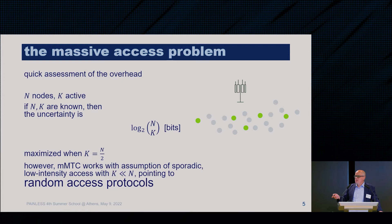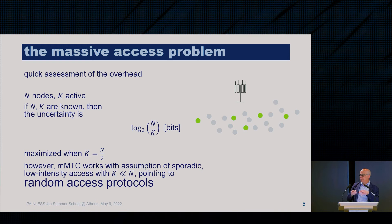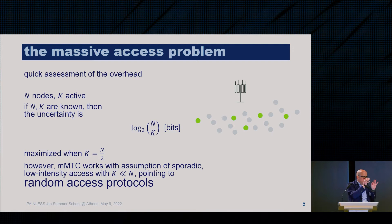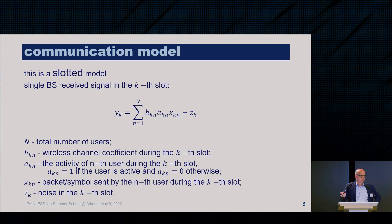In MMTC, this overhead is largest when k equals n/2, where we have the largest number of possible subsets. But Massive Machine-type Communication, as in classical Aloha, works by assuming low intensity access — the number of active nodes is much less than the total. Now, there are many communication models we can use; one that has been popular in recent years is the signal processing model, where we have a receiving antenna YK.